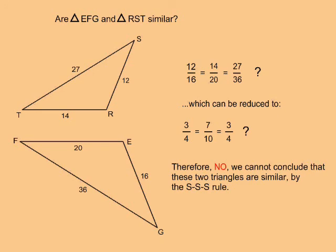I get 12 over 16, 14 over 20, and 27 over 36. When I reduce these fractions, two of them reduce to 3 over 4, but the third one reduces to 7 over 10.